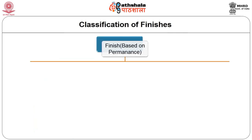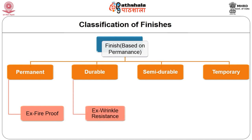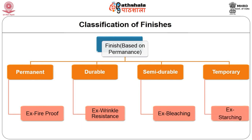Finishes can be categorized based on degree of performance as permanent, durable, semi-durable and temporary. Permanent finishes usually involve a chemical process, change the fiber structure and last the life of the fabric — for example waterproof or fireproof finish. Durable finishes last throughout the life of the article but their effectiveness may diminish after each washing — examples are permanent pleats or wrinkle resistance. Semi-durable finishes last through several launderings or dry cleanings and then are removed — example bleaching. Temporary finishes are removed or diminished after the first laundering or dry cleaning — example starching.